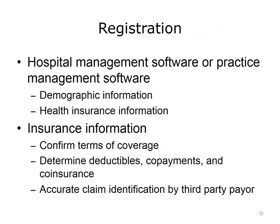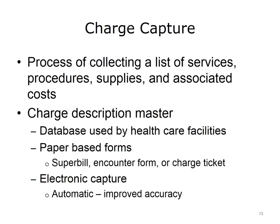Today, hospital management or practice management software accomplishes most billing tasks electronically. During the registration process, the software allows the accurate capture of patient demographic and health insurance information. This allows the provider to confirm eligibility and enrollment in the healthcare plan, effective dates, benefits, and limitations and exclusions. It also permits the determination of deductibles, co-insurance, and co-payments. Acquiring the correct information ensures accurate reimbursement. Without accurate information, a third-party payer may be unable to identify the patient or insured, resulting in a denial of payment for services provided.